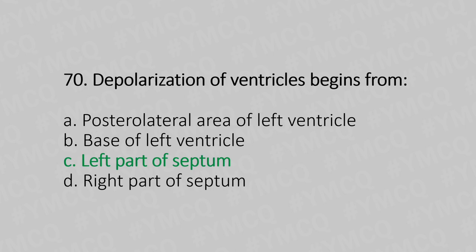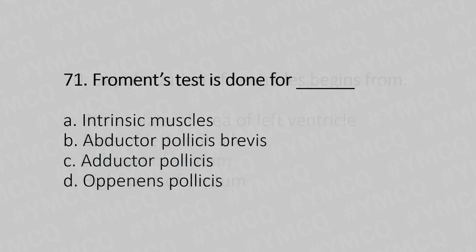Question 71: Froment's test is done for — Option A: intrinsic muscle, Option B: abductor pollicis brevis, Option C: adductor pollicis, Option D: opponens pollicis. The answer is Option C, adductor pollicis.